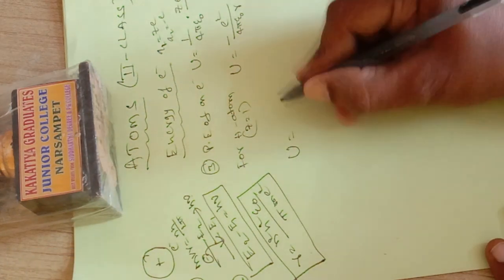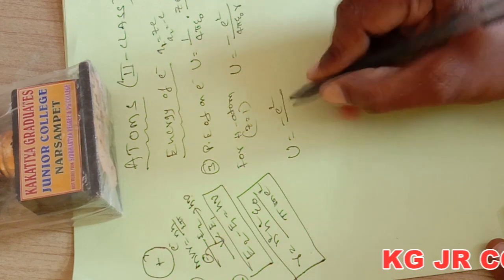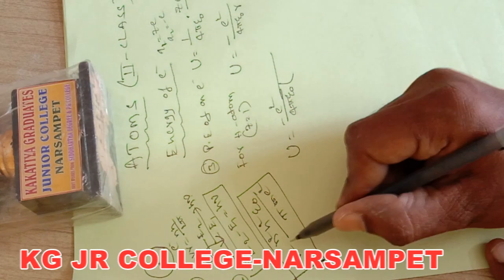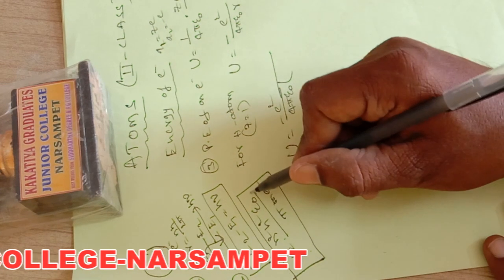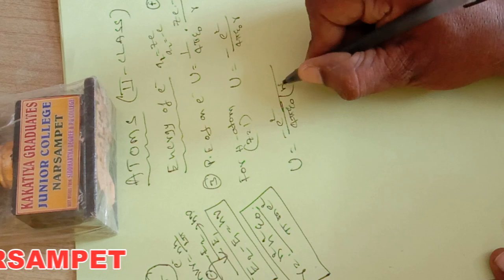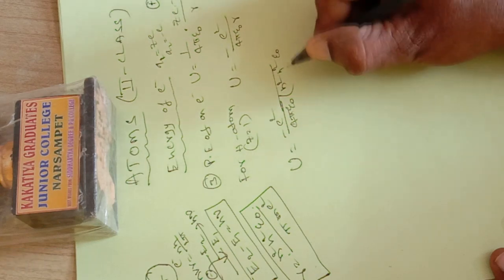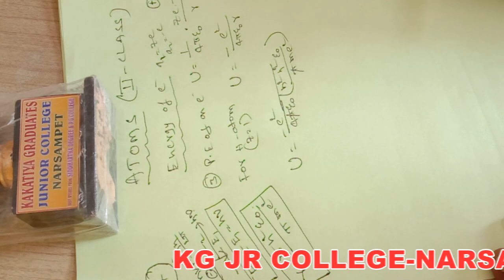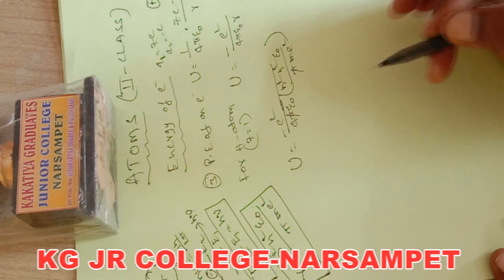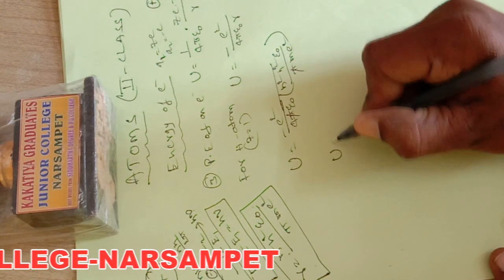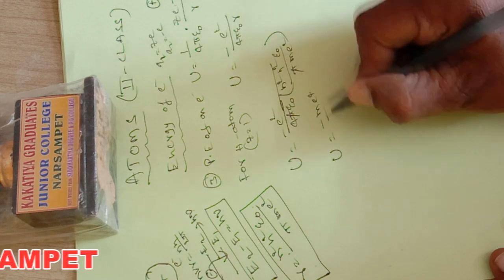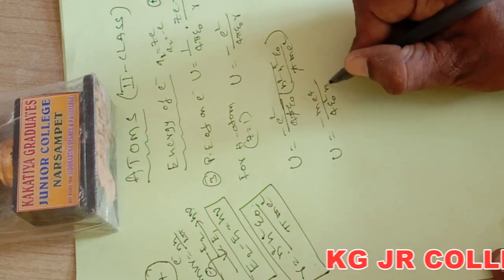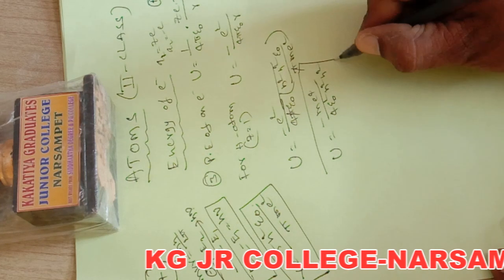Now substitute the radius value r equals n² h² ε₀ by π m e² into the potential energy equation. U equals minus e² by 4π ε₀ times n² h² ε₀ by π m e². After simplification, π cancels and m e² comes to the numerator, giving U equals minus m e⁴ by 4 ε₀² n² h².